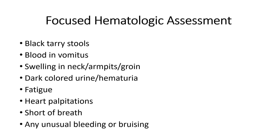When doing a focused hematological assessment, look at the patient's stool for black tarry stools or blood, blood in the urine (hematuria), and blood in the vomit. Check for lymphatic swelling in the neck, armpits, or groin — which may suggest infection or white blood cell issues. Ask about recent fatigue, heart palpitations, shortness of breath, and any unusual bleeding or bruising.